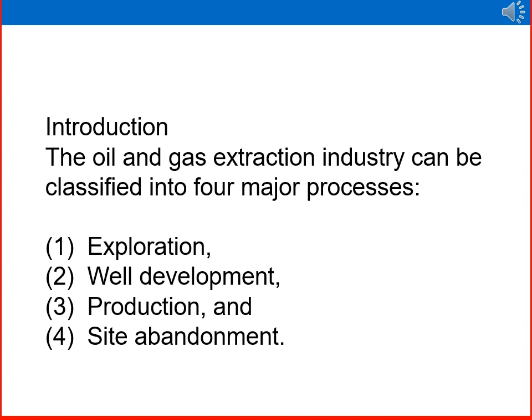As an introduction, the oil and gas extraction industry can be classified into four major processes. First is exploration — finding out whether oil is available in any reservoir. Second is well development — if oil is available, we determine a method of drilling to bring subsurface oil to the surface. Then there is production, site preparation, and abandonment.